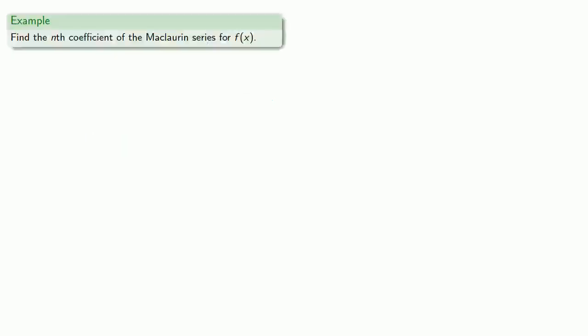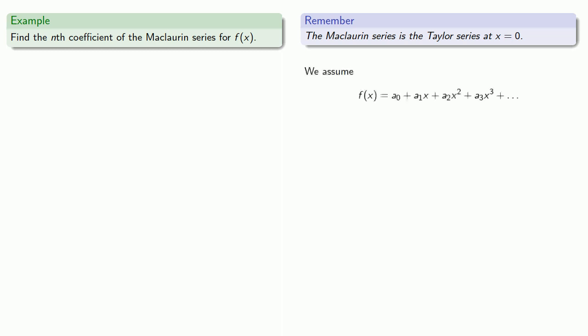So for example, suppose we want to find the nth coefficient of the Maclaurin series for some function. Remember, the Maclaurin series is the Taylor series at x equals zero, and our concept is we're assuming that there is some power series that gives us f(x). Now, if x equals zero, then we find that f(0) gives us a0.